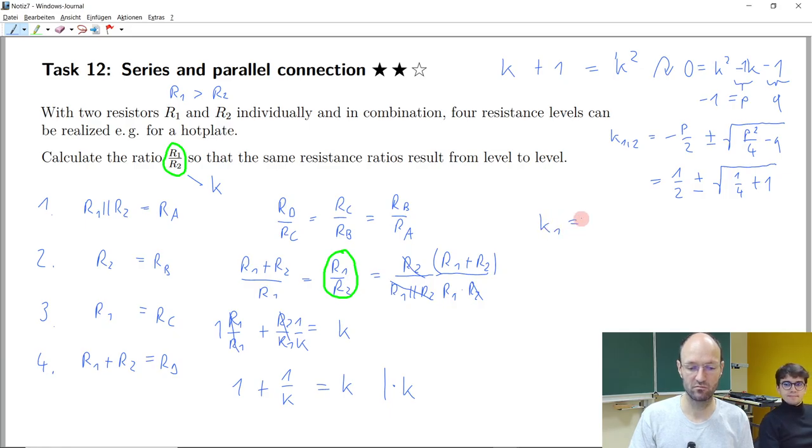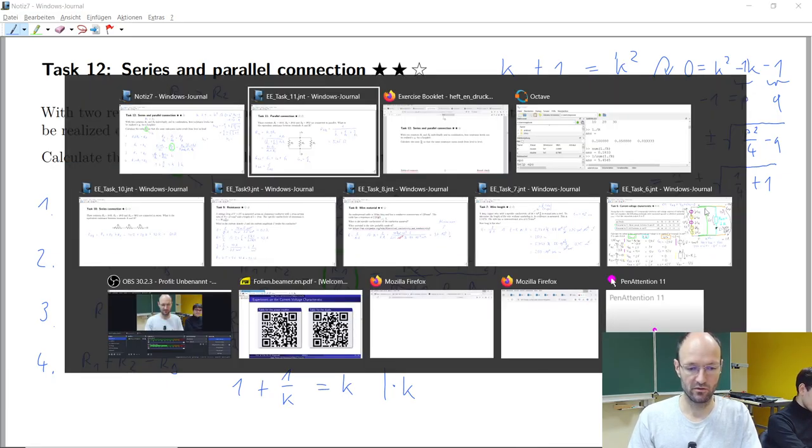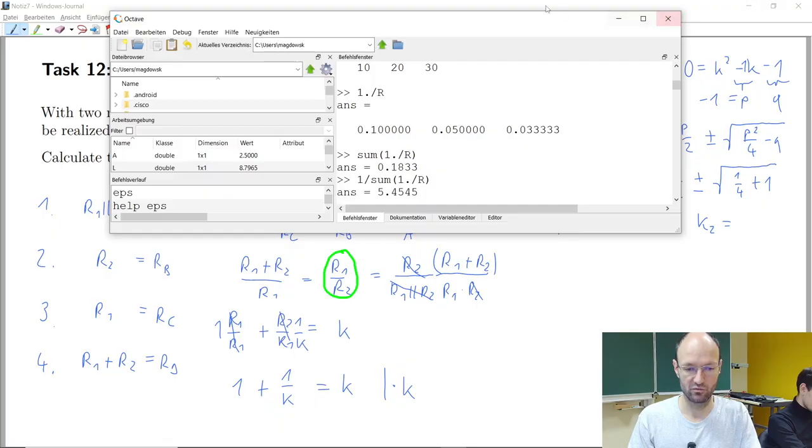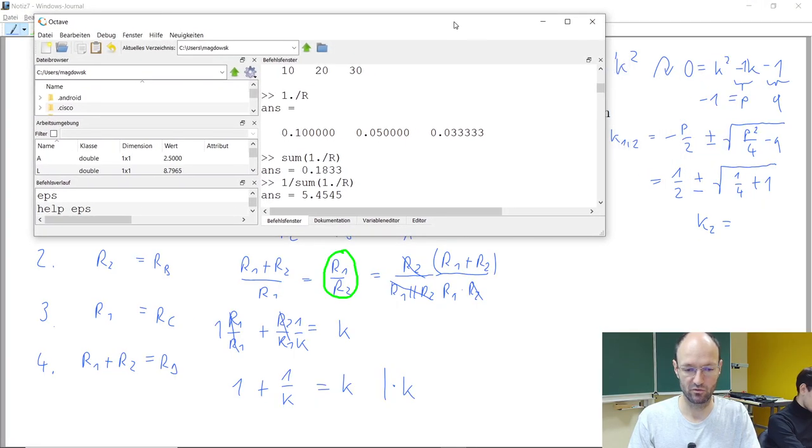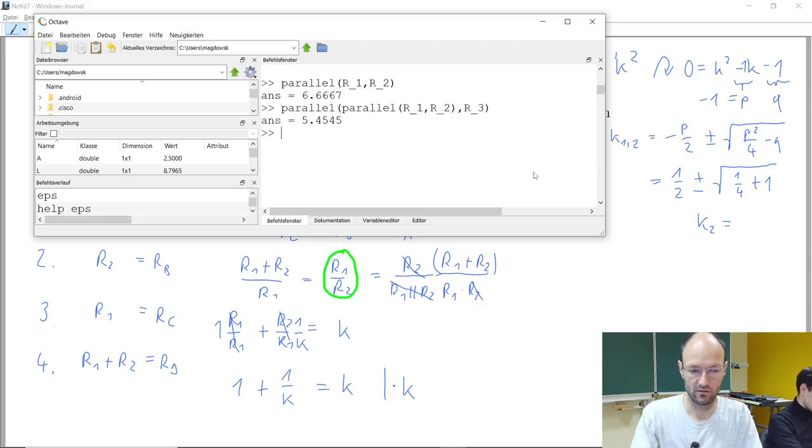So K1 and K2. And I will once again use Octave to calculate this. So the K1 is 0.5 plus the square root of 0.25 plus one. So it will be 1.6 something.